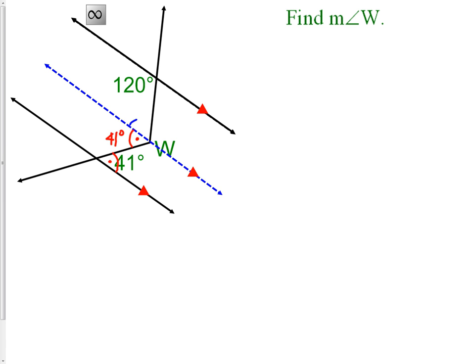Next, we need to find the measurement of this angle. Well, again, if we use our auxiliary line, and this angle that I put the blue dot in, along with the angle that is marked by 120 degrees, those two angles are definitely not congruent, but they are consecutive interior angles. What we know about consecutive interior angles is that they are supplementary, meaning they add up to 180 degrees. Therefore, if this angle is 120, then this angle down here has to be 60. Now we can see that angle W's measurement is 101 degrees. We add 60 plus 41 to get 101.